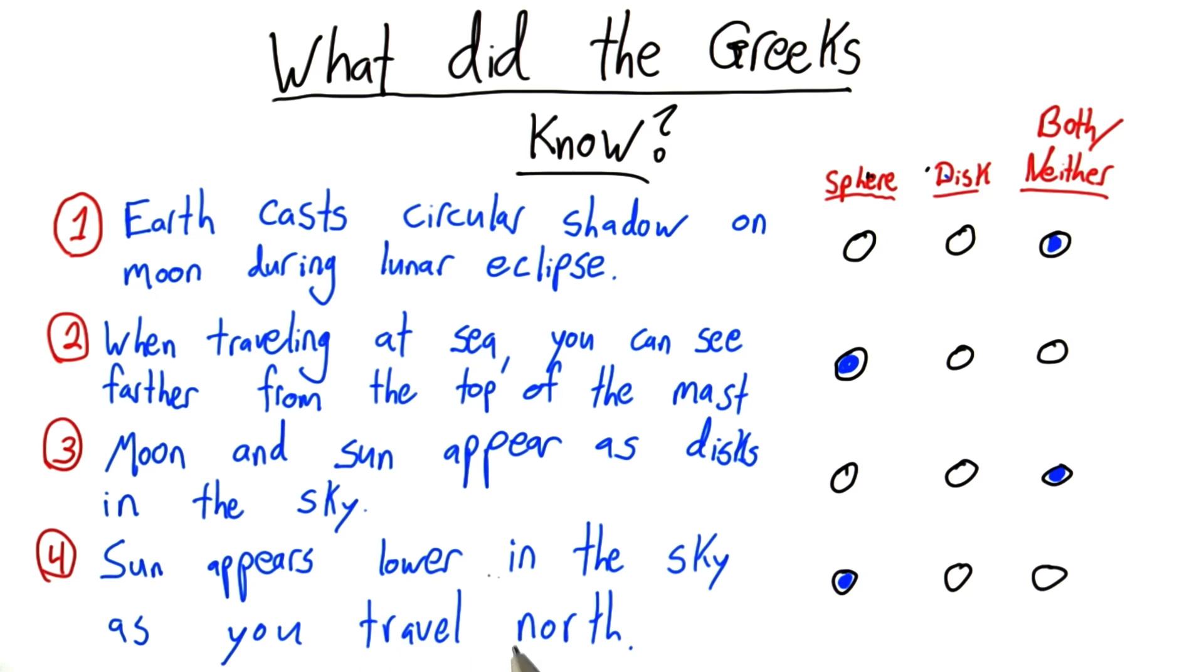Now, it's this last point, that the Sun appears lower in the sky as we travel north, that Eratosthenes will exploit to determine the circumference of the Earth.